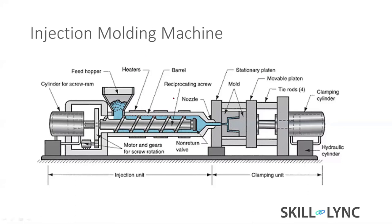This is the basic structure of a molding machine. You can see this portion is called the injection unit, and the second portion is the clamping unit. In the injection portion there is the hopper - they feed the material inside. This is called a reciprocating screw - it will rotate and act as a plunger, pushing the material. The screw has three portions: a feeding zone, a transferring zone, and a front zone.